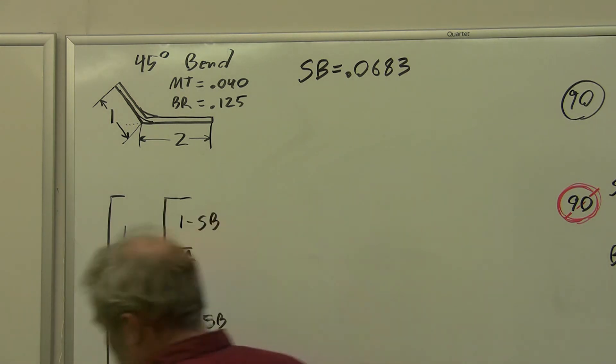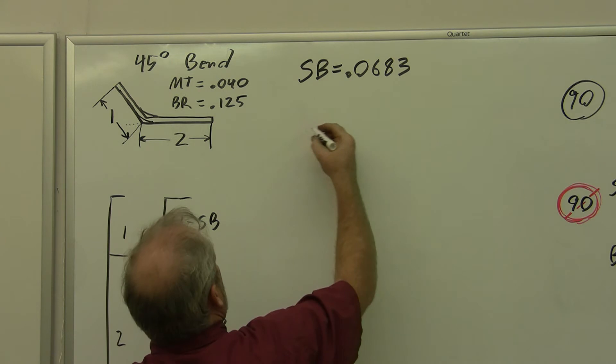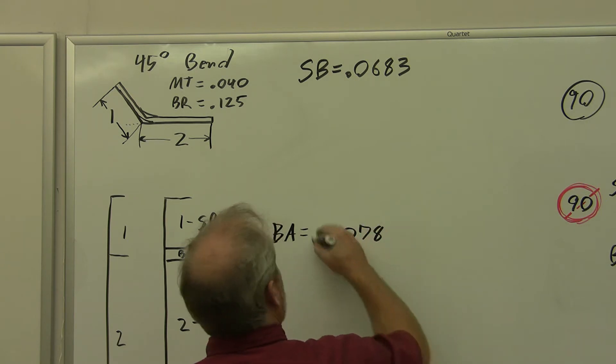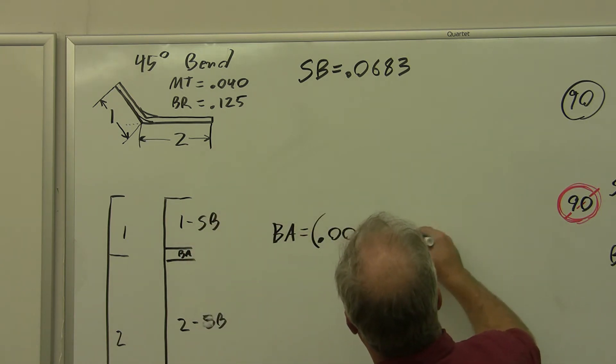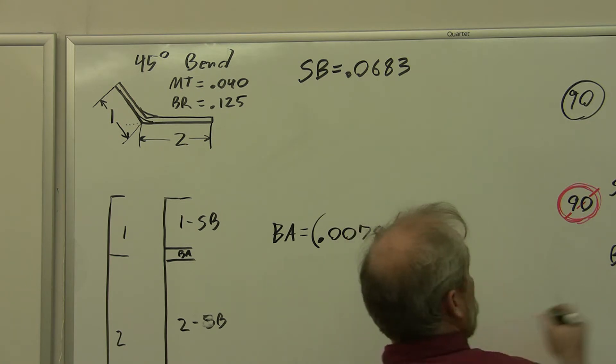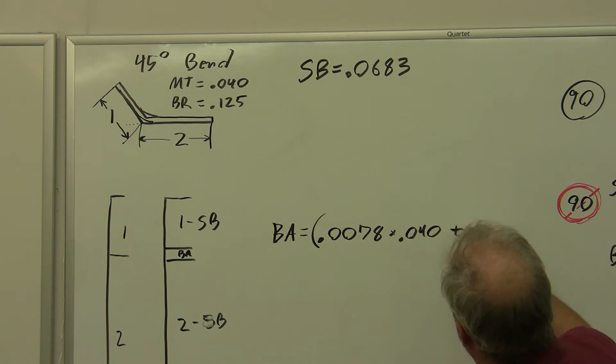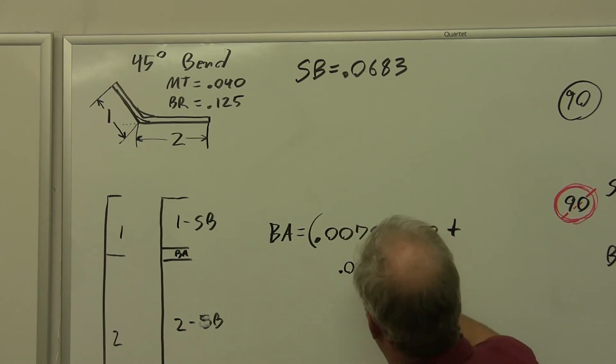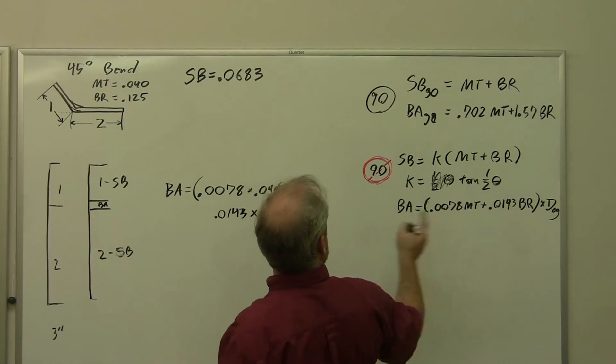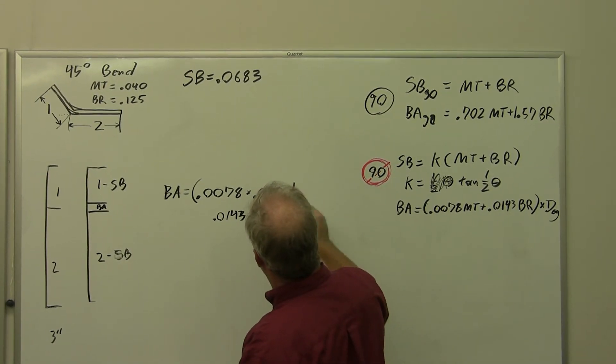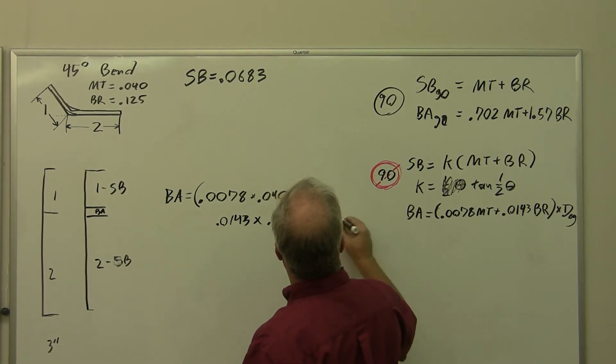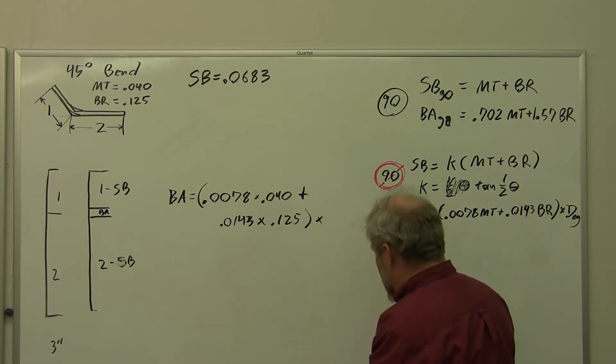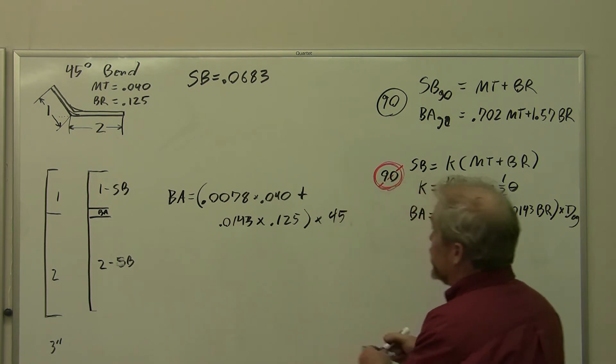Now we're ready to calculate our bend allowance. Our bend allowance is equal to 0.0078 times our material thickness, which is 0.040. Then we have to hit plus. I'm going to have to move on to the next line because we don't have enough room. 0.0143 times our bend radius, which is 0.125. We're going to close parentheses times the number of degrees. But our number of degrees was 45.